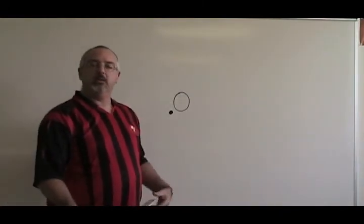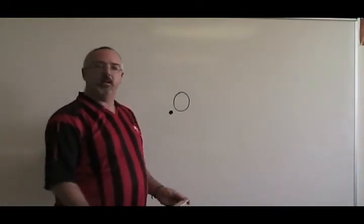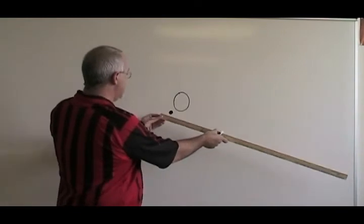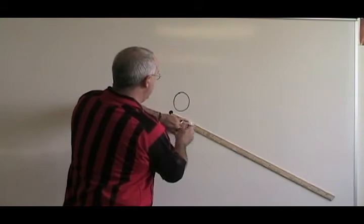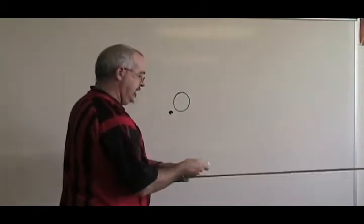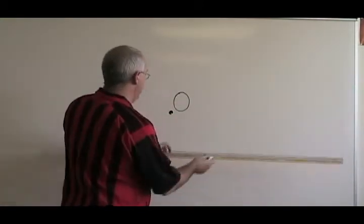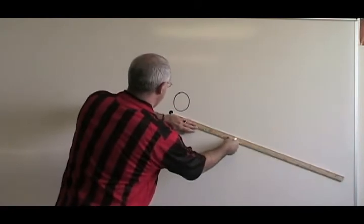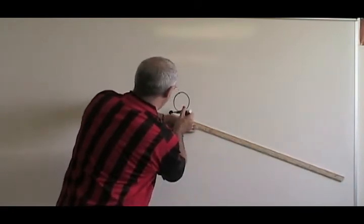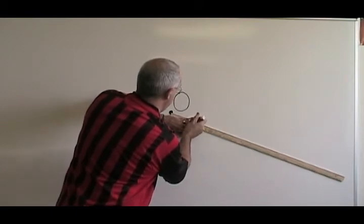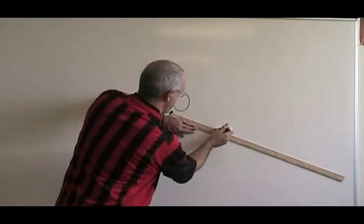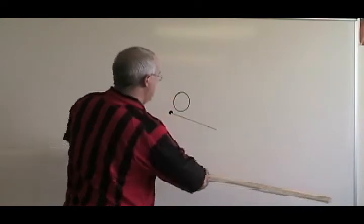To draw a circle 25 centimeters in radius, I'm going to start at the zero dot, and pointing my ruler in any direction, I'm going to draw a line that's 25 centimeters long. There it is.